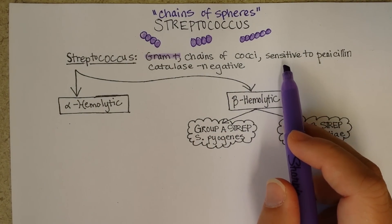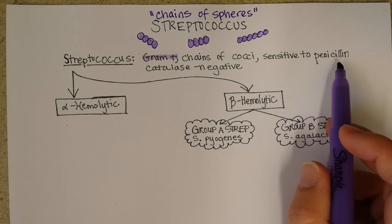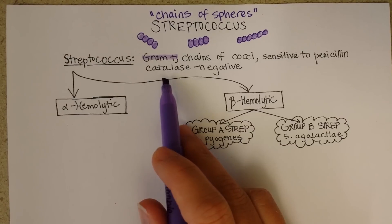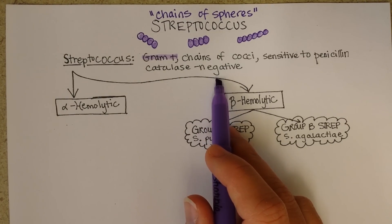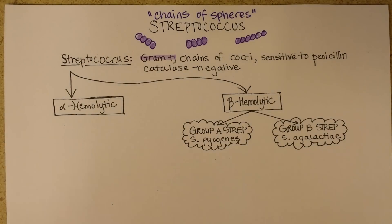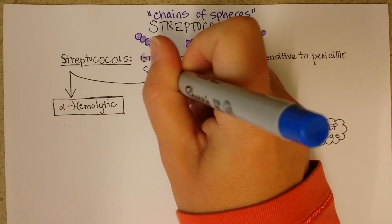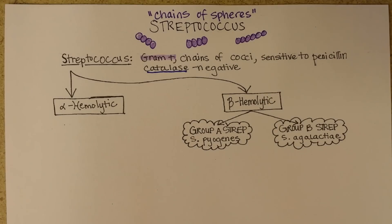Generally, Streptococcus is sensitive to penicillin — and that's good news — and penicillin-type drugs like amoxicillin, etc. Streptococcus is also catalase negative, which is interesting because many medically significant bacteria do have catalase. Catalase is an enzyme important for living around oxygen without being damaged by it, so Streptococcus has other ways of tolerating oxygen.